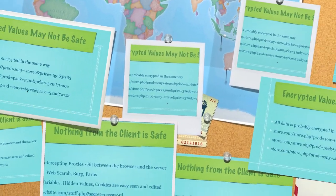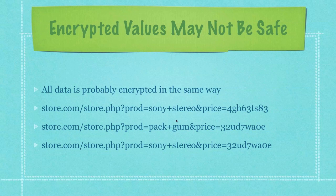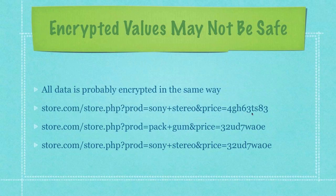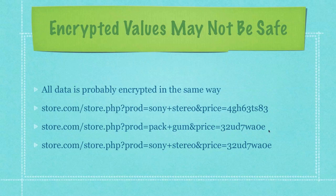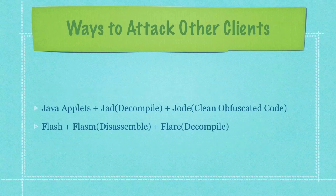Variables, hidden values, cookies — anything can easily be seen and edited. If you use the GET method, it's easy to change anything passed through the URL. Encrypted values also might not be safe if sent from the client. For example, if you create a PHP store and pass an encrypted price for a Sony stereo, someone could find the encrypted value for a cheap item like a pack of gum and substitute it in the URL — a simple but effective attack against encrypted client-side values.